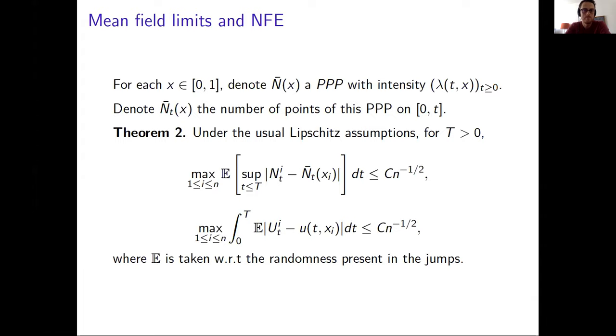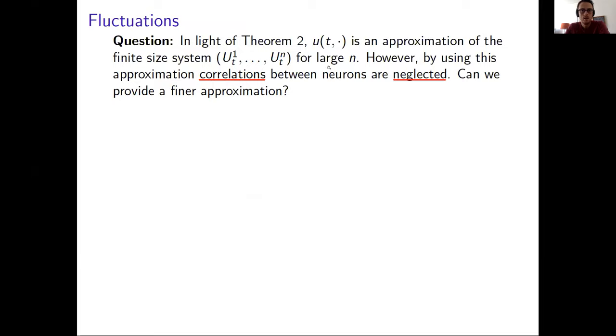So in some sense, I'm saying that u(t), the solution of the mean field Neural Field Equation, could be an approximation for the finite size system U^n(t).